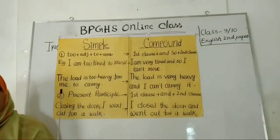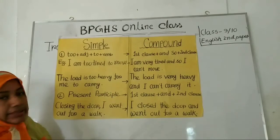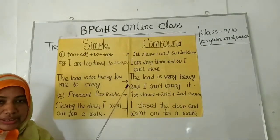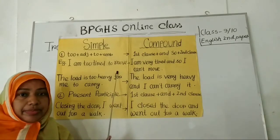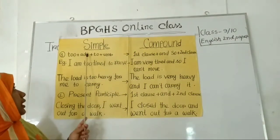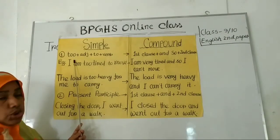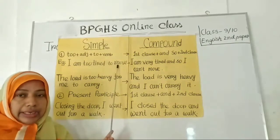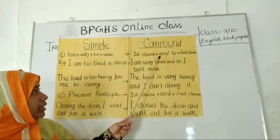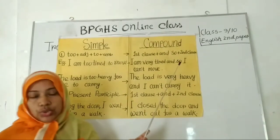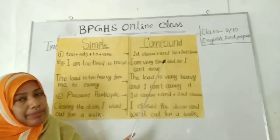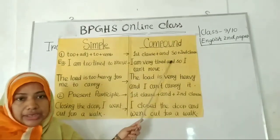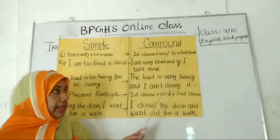Let's start from rule number one. In a simple sentence, if you get the construction: too plus adjective plus to and then verb, you will have to make it compound by making two clauses and connecting them with the coordinating conjunction and so. Let's see an example.